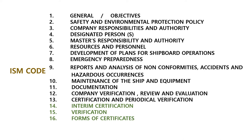Chapter 1: General objectives. Chapter 2: Safety and environmental protection policy. Chapter 3: Company responsibilities and authority. Chapter 4: Designated person. Chapter 5: Master's responsibility and authority. Chapter 6: Resources and personnel. Chapter 7: Development of plans for shipboard operation. Chapter 8: Emergency preparedness. Chapter 9: Reports and analysis of nonconformities, accidents and hazardous occurrences.